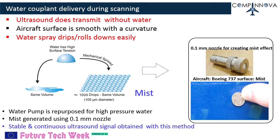Water coupling delivery during scanning: aircraft fuselage surface is painted smooth with a curvature. Ultrasound does not transmit into the material without water coupling the wedge surface and the aircraft surface under inspection. Uniform wetting on the surface is essential for stable, repeatable ultrasound echo reflections. If water is sprayed in the form of large droplets, water rolls down or drips easily. However, using water in the form of a mist instead of large droplets, uniform wetting can be achieved with minimum water.